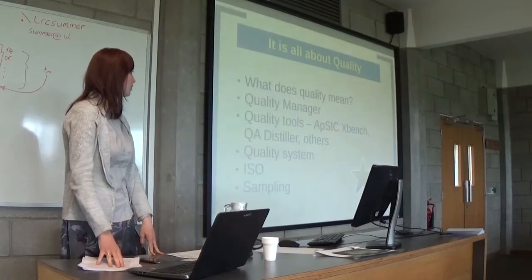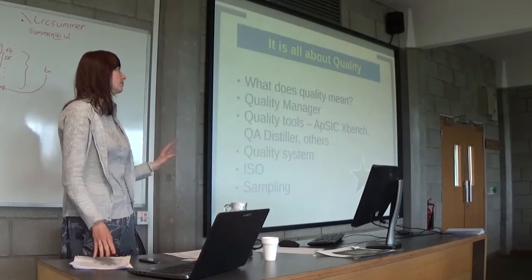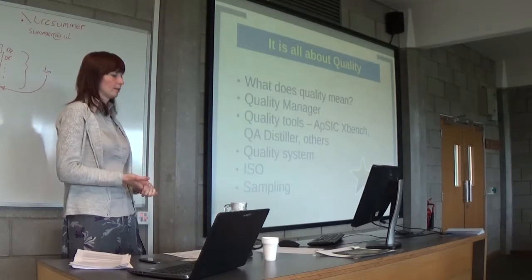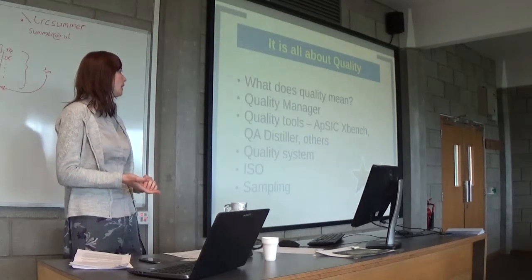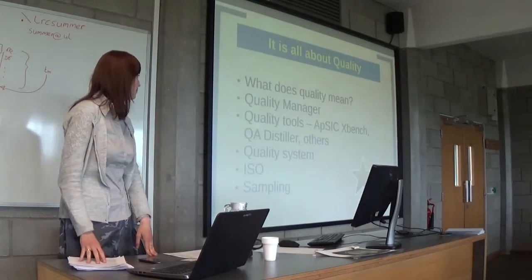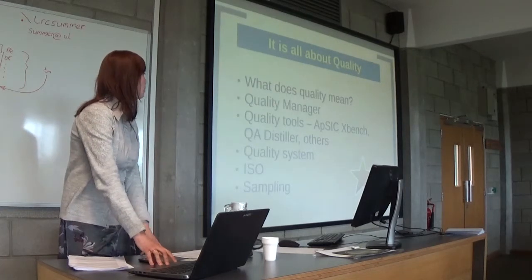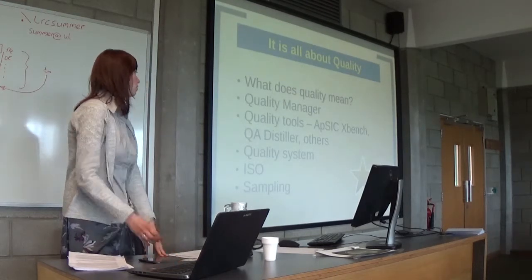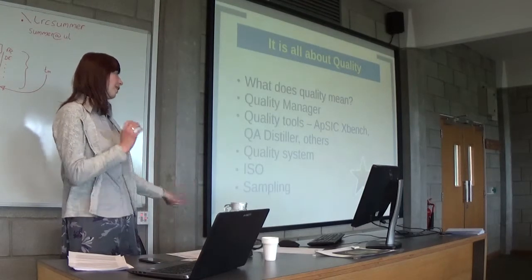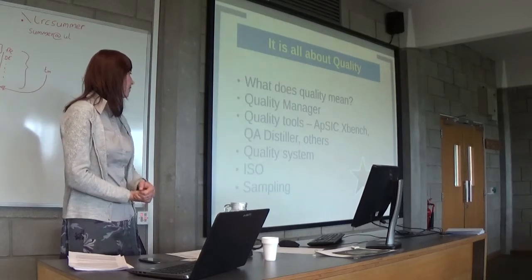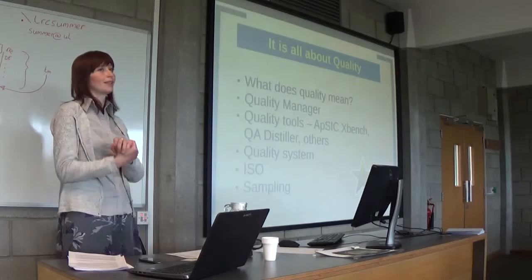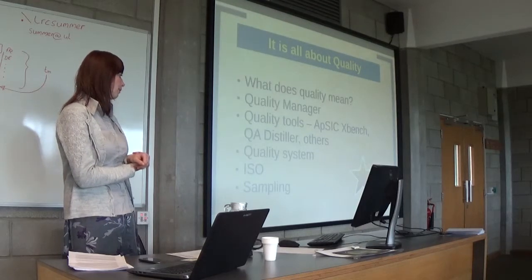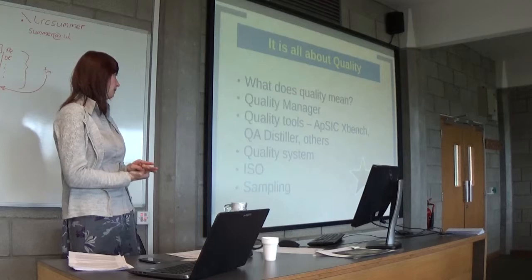Usually at translation and localization companies there is a position of quality manager — though it can be named differently — who takes care of quality issues and makes sure that everything is correct and projects are running smoothly. Companies typically use quality tools like Xbench or Verifika to help keep the best quality. The quality system is something companies have in order to keep quality at the highest level, and ISO certification usually means these certified companies have a certain quality system in place.